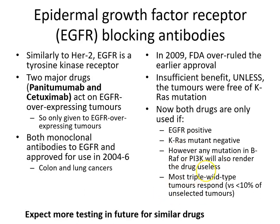Any mutation in BRAF or PI3 kinase would also render the drug useless. What was subsequently found is that triple wild type tumours — wild type for KRAS, BRAF, and PI3 kinase — would tend to respond, whereas less than 10% of unselected EGFR positive tumours responded. So if you can select EGFR positive tumours and verify they are lacking mutations in RAS, RAF, or PI3 kinase, the vast majority of those patients would gain clinical benefit from those very expensive monoclonal antibody therapies. This technology is being rolled out for other cancers and targeted therapies.